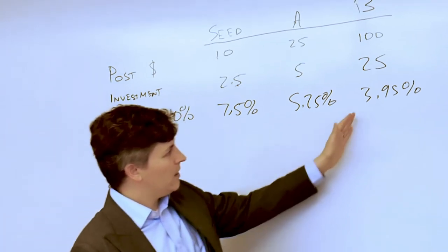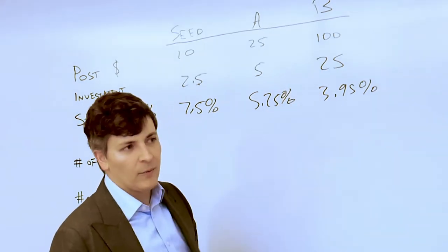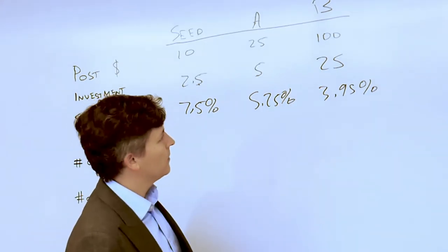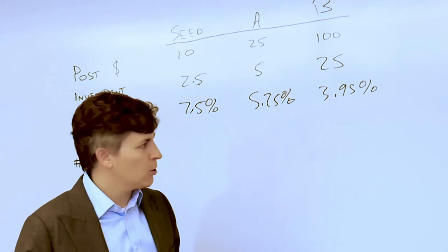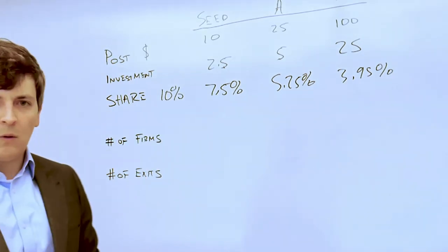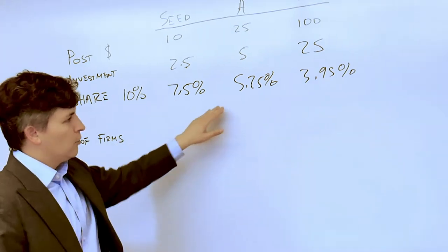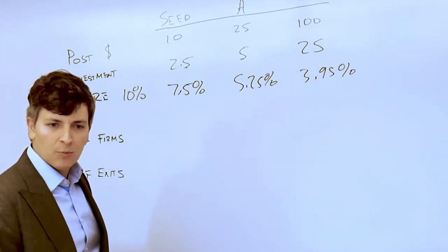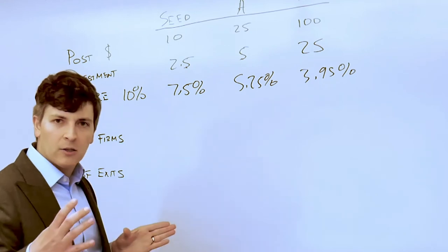You can do this again in Series B, and twenty five million dollars of investment and a hundred million dollar post-money valuation later, your share of the equity is about four percent. So what's happening here? Well, your share is getting smaller but the pie is growing.